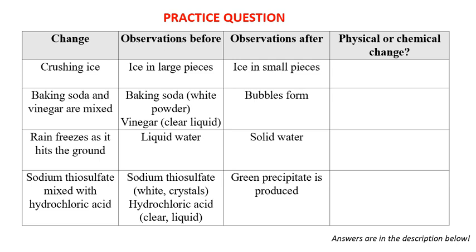The second example: baking soda and vinegar are mixed. Before, baking soda is a white powder and vinegar is a clear liquid, but after, bubbles are being formed. Is it a physical change or a chemical change?